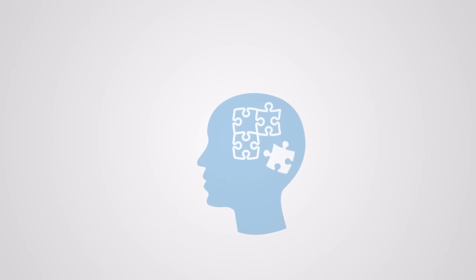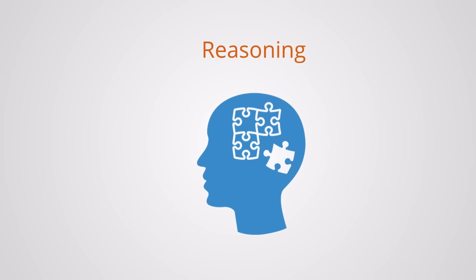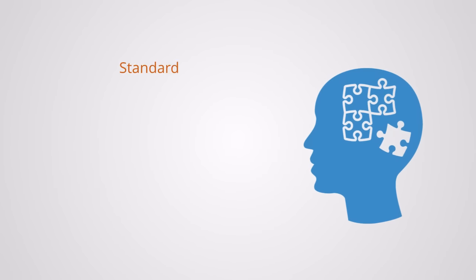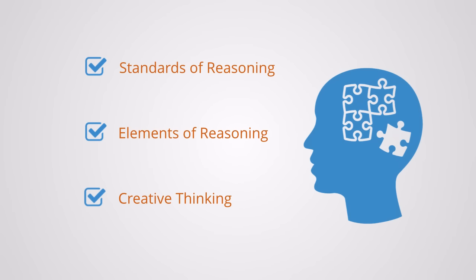In the third section, we will start our discussion on the theme of reasoning, the process through which we take in information and use some logic to infer conclusions. We will take the process apart to understand the elements of effective reasoning. Here we will talk about the standards of reasoning, elements of reasoning, creative thinking, and more.